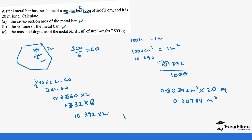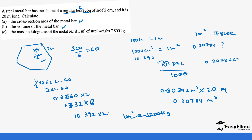Multiplying 0.0010392 m² by the length of 20 meters gives 0.020784 meters cubed. We know one meter cubed of steel weighs 7,800 kilograms. So we multiply 0.020784 times 7,800, which gives us 1,621.152 kilograms. That is our answer for the mass of the steel bar.